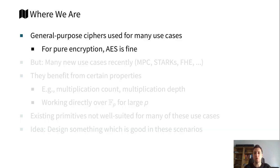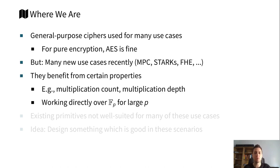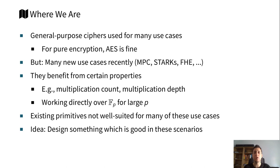Let me first give a short overview of where we currently are. We have many general purpose ciphers used for many use cases. For instance, for pure encryption we use AES, and this is perfectly fine. However, recently there appeared many new use cases such as MPC, STARKs, or FHE, and these use cases benefit from certain properties. For instance, the multiplication count may be important, but also the multiplication depth. They also tend to work directly over large prime fields — prime numbers in the range of 2^128, for example. This leads us to the fact that existing primitives like AES are not very well suited for many of these new use cases, and the idea is to design something which is good in these scenarios.